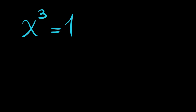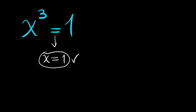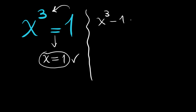The obvious root, as all of you have noticed, is x is equal to one. But we want to find the other two roots. So we will send this one to the left hand side and write this as x cubed minus one is equal to zero. Now this is the difference of cubes and can be factorized.